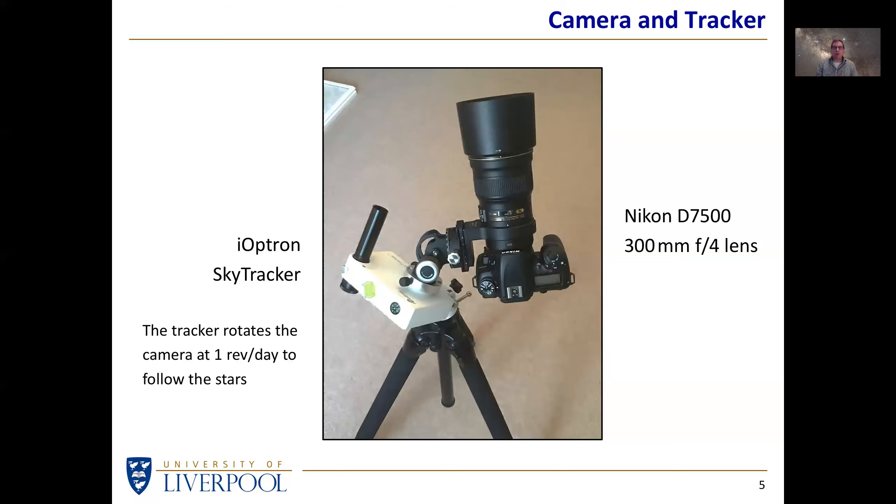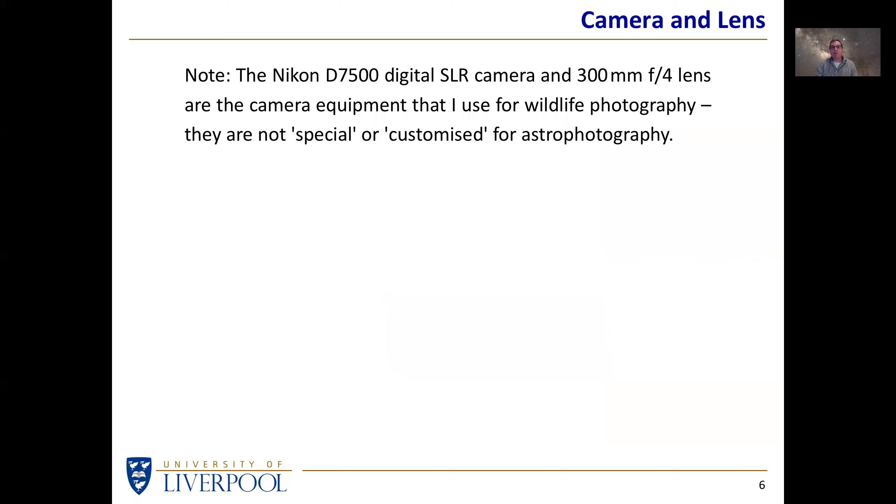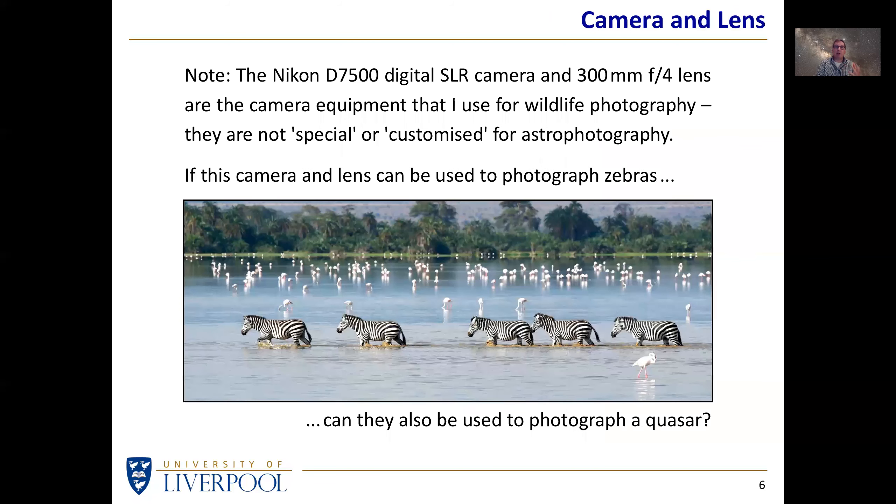That was the configuration I used. I then pointed it at a particular chunk of sky. Bear in mind that this camera is not a special camera, it's not a modified camera, it's not an astro camera. It is simply a camera lens that I would have used anyway and indeed did use last year on safari. This same camera and lens have been used to photograph zebras, so the question is can they be used to photograph a quasar?